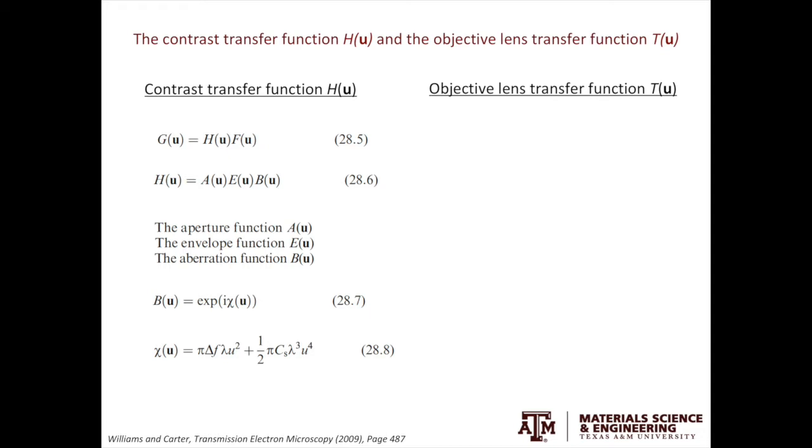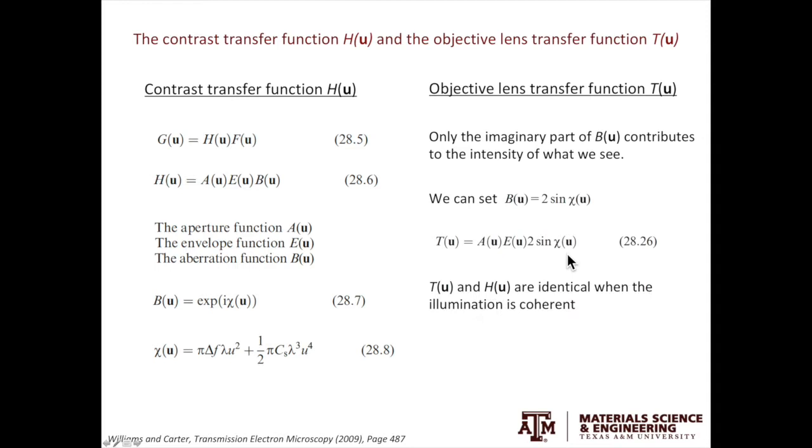In hi-res TEM, we'll introduce another concept called the objective lens transfer function. Here, only the imaginary part of B(u) contributes to the intensity of what we see in hi-res TEM. B(u) is simply 2 sin chi-u. Then T(u) is the product of A(u), E(u), and 2 sin chi-u. You can see the similarities and the differences of H(u) and T(u). When the illumination is coherent, then T(u) will be equal to H(u).